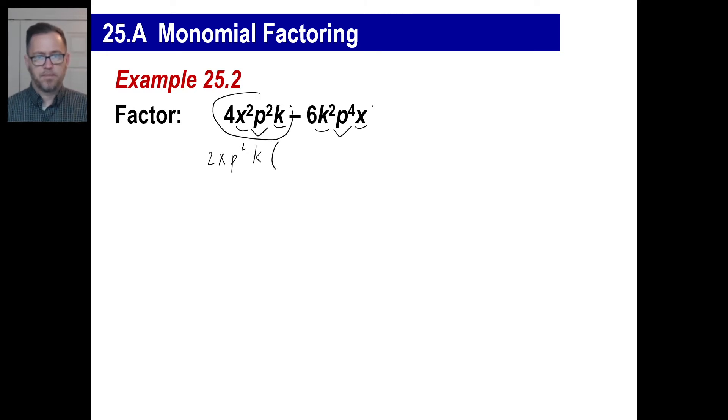Once we've got that, then we're doing two division problems, basically. So it's this divided by that. What do we get? 4 divided by 2, 2. x squared divided by x, x. p squared divided by p squared, 1. Then k divided by k, 1. No need to write 1 times 1 there. You're done. Just do it like that. 6 divided by 2 is 3. Let's see here. Let's go with our x first. x divided by x is just 1. No need to write that. k squared divided by k is going to be k. p to the fourth divided by p squared will be p to the second. And again, you can always check your answers if you want.